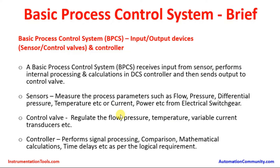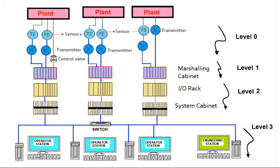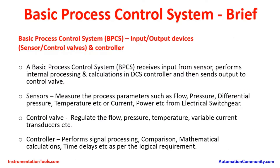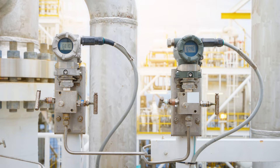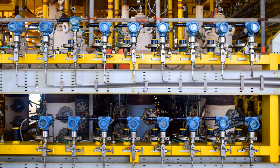What are the components involved in the Basic Process Control System? We are going to see about the input-output devices. BPCS receives input from sensors, performs internal processing and calculations in the DCS controller, and then sends output to the control valve. Sensors measure process parameters such as flow, pressure, differential pressure, etc., or current, power, etc., from an electrical switch.